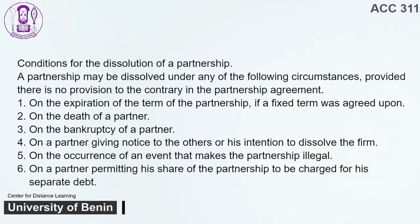1. On the expiration of the term of the partnership, if a fixed term was agreed upon. 2. On the death of a partner. 3. On the bankruptcy of a partner. 4. On a partner giving notice to the others of his intention to dissolve the firm. 5. On the occurrence of an event that makes the partnership illegal. 6. On a partner permitting his share of the partnership to be charged for his separate debt.